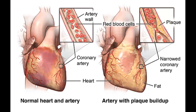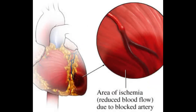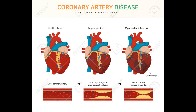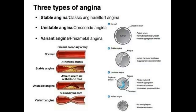It is caused by obstruction of the coronary artery causing ischemia, but not necrosis or death of heart musculature. Angina pectoris is a common presenting symptom in patients with coronary artery disease. Major types of angina are stable angina, unstable angina, and variant angina.